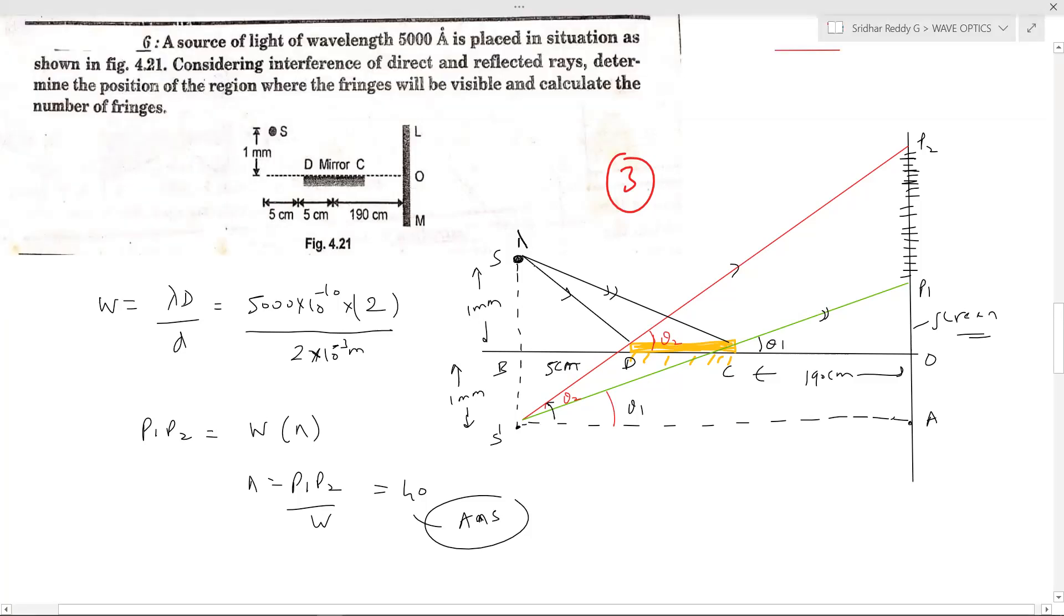So what is the wavelength? Let it be lambda. So what is the distance BD equal to 5 cm? What is the distance DC equal to 5 cm? What is the distance CO equal to 190 cm? Now let's come for this one. How to calculate that distance P1 P2? First we'll calculate the fringe width. What do you mean by fringe width? The distance D can be determined. The distance D is equal to SB plus S dash B, 1 mm plus 1 mm will be 2 mm. I'm writing 2 into 10 to the power of minus 3 meter.